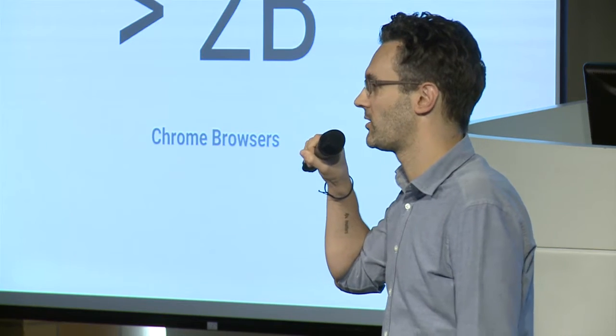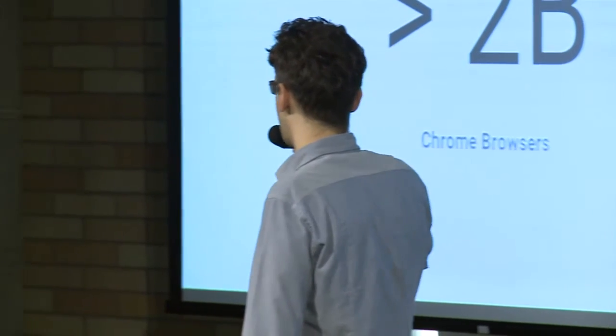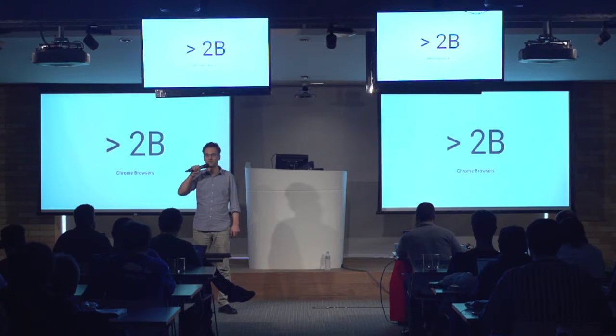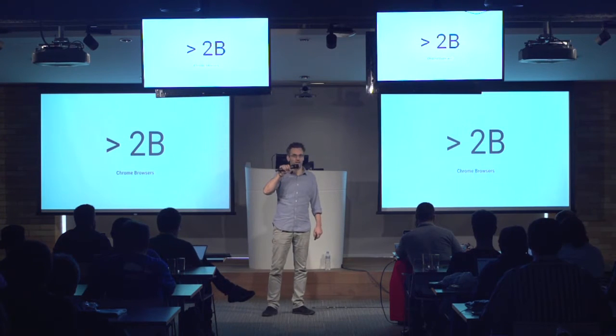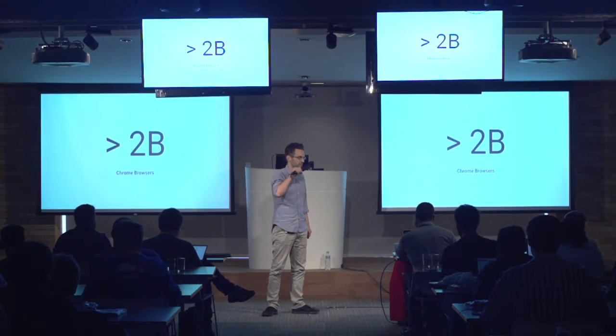Just two weeks ago at the Chrome Dev Summit, it was published that there are 2 billion Chrome browsers across desktop and mobile that are active every month. These are monthly active users, and all of those are WebRTC enabled — WebRTC is built in, and you can directly enable all Chrome users by making use of the Web APIs we have.